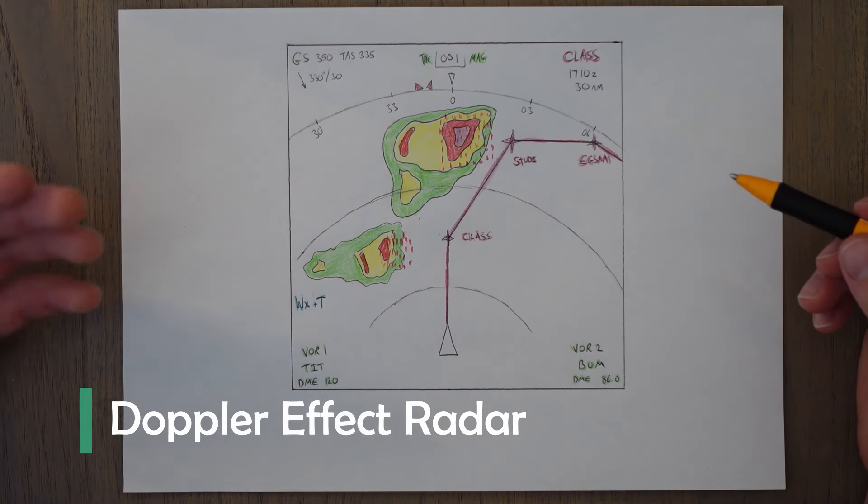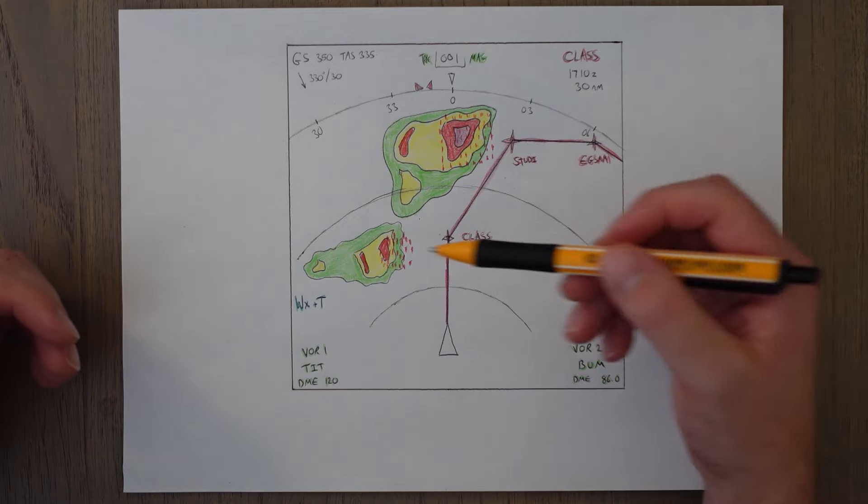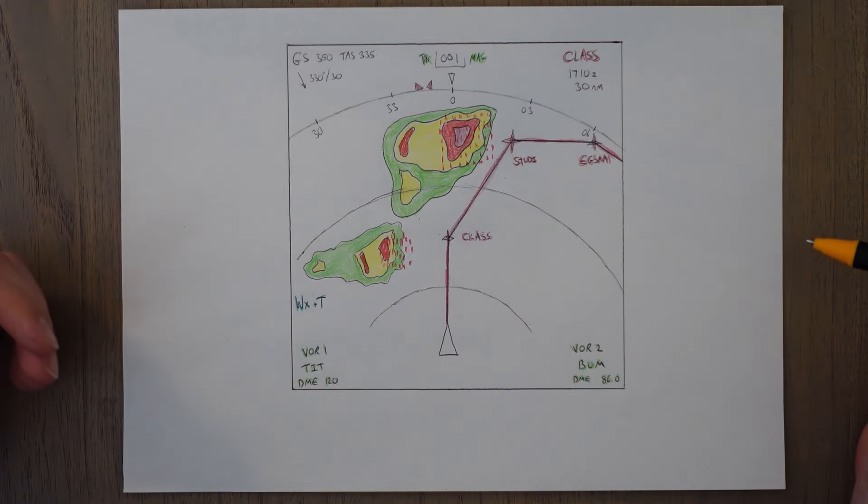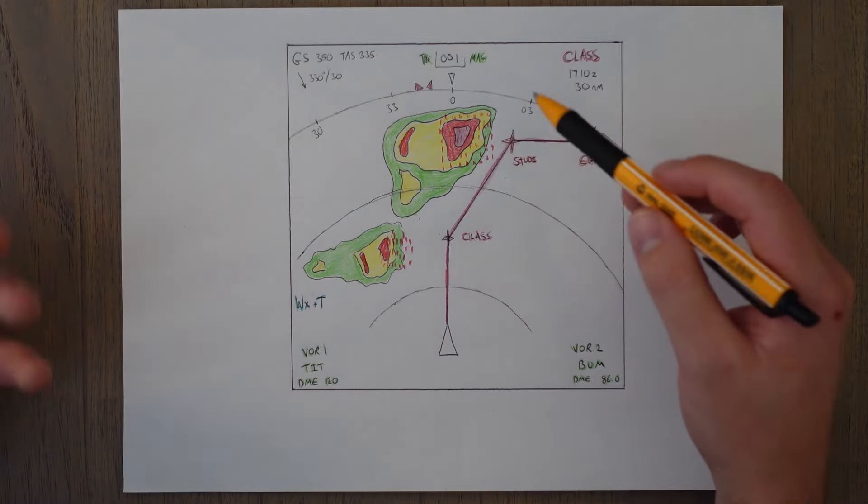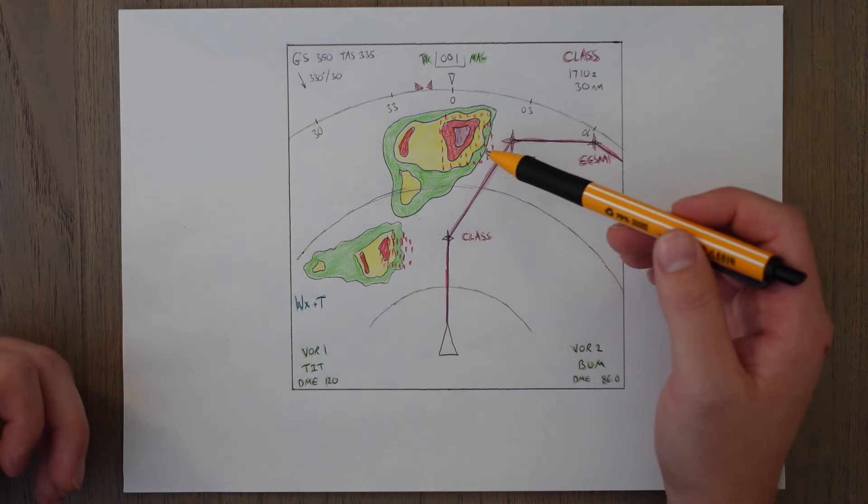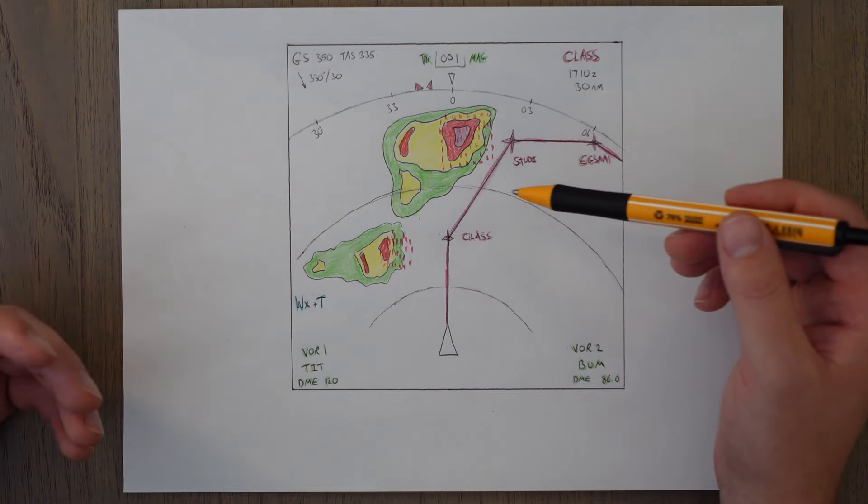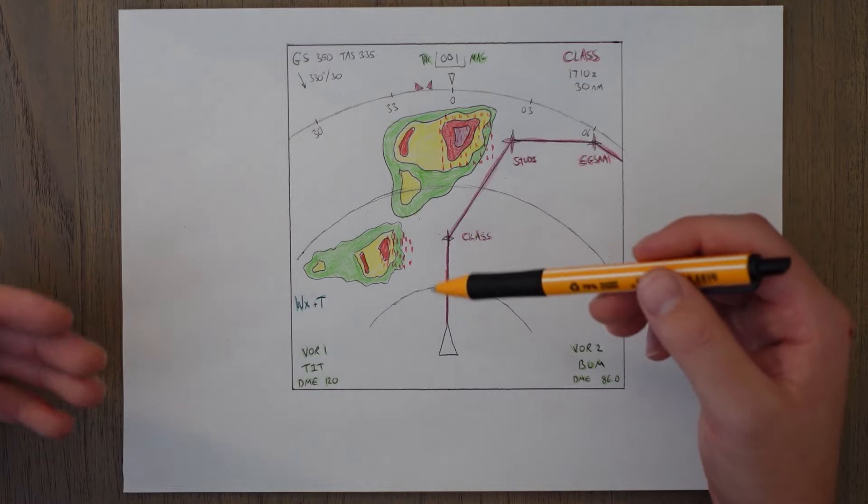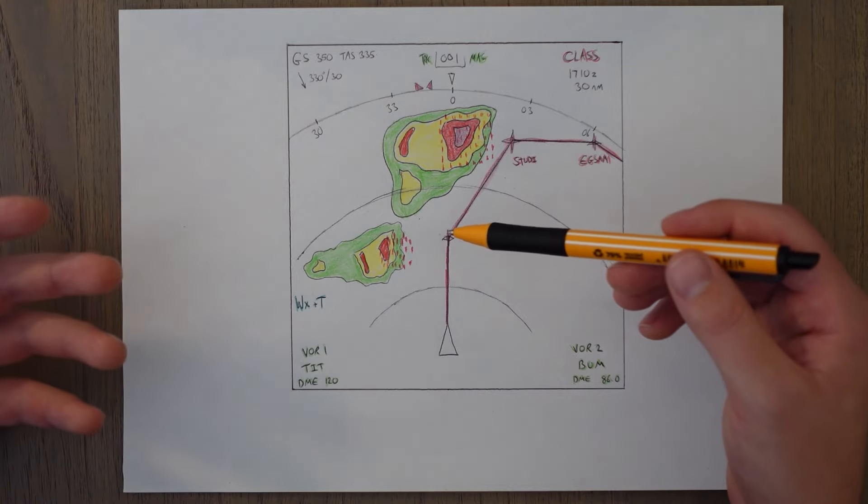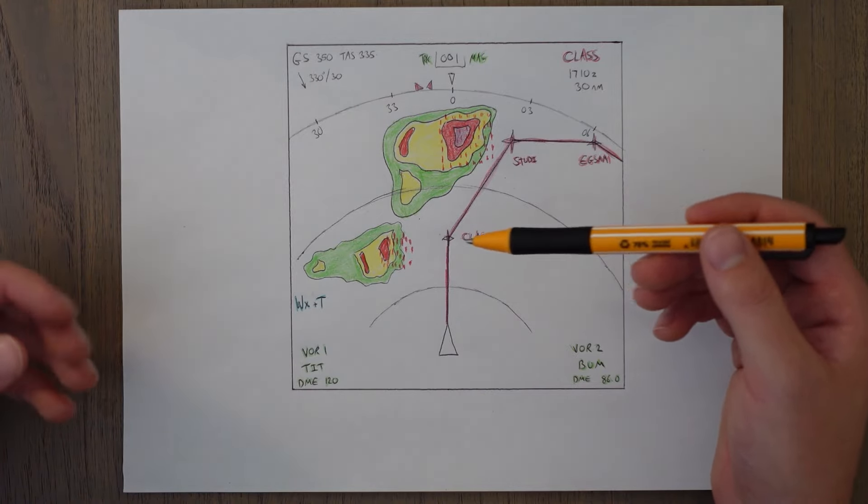Most modern radars have turbulence detection built in as well. This uses the doppler effect to detect horizontal movements of water droplets in the air. This will subsequently paint a turbulence return on the radar which is usually this red checkerboard pattern. And as well as turbulence we can also use the doppler effect to predict areas of wind shear which is essentially a very intense form of horizontal turbulence.